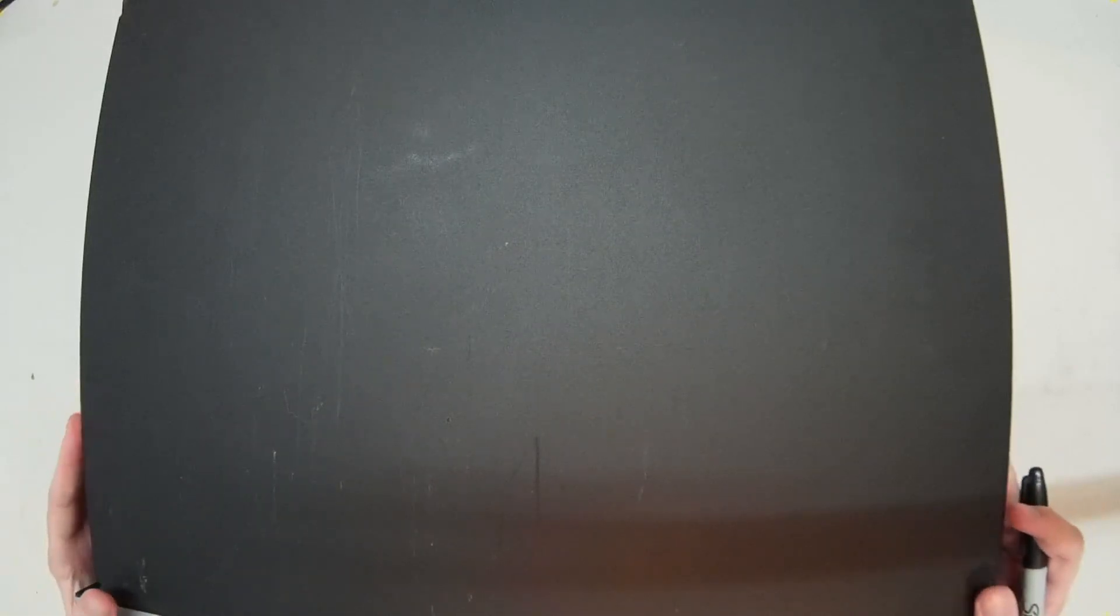Hi everyone and thanks for tuning in today. We have a different kind of video planned. I have one of our QSC amplifiers on the desk today, this is the PLX3102. It's one from the Power Light series from QSC, and we're going to discuss what makes this series unique and the difference between a Class AB amplifier, a Class H amplifier, and a Class D amplifier.